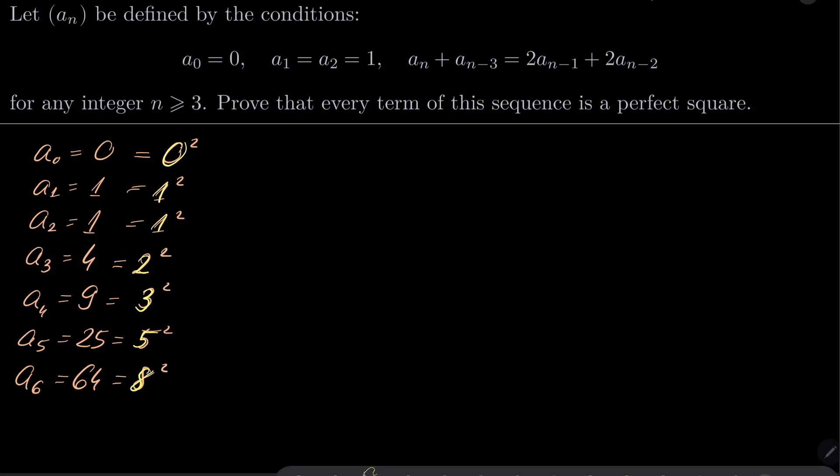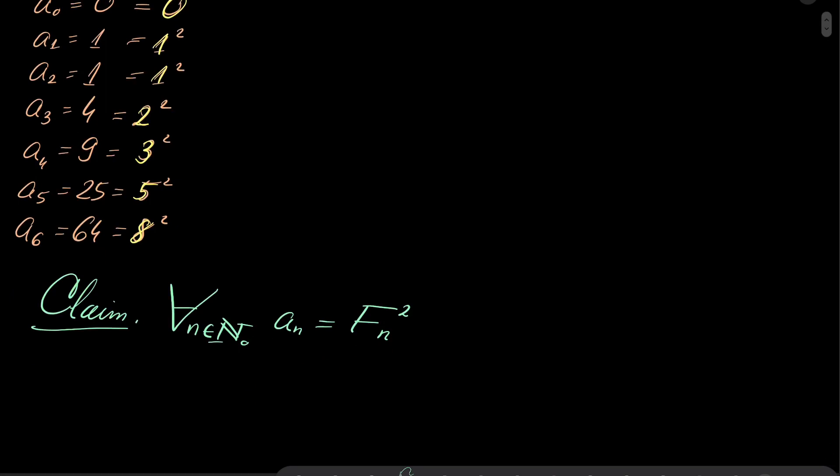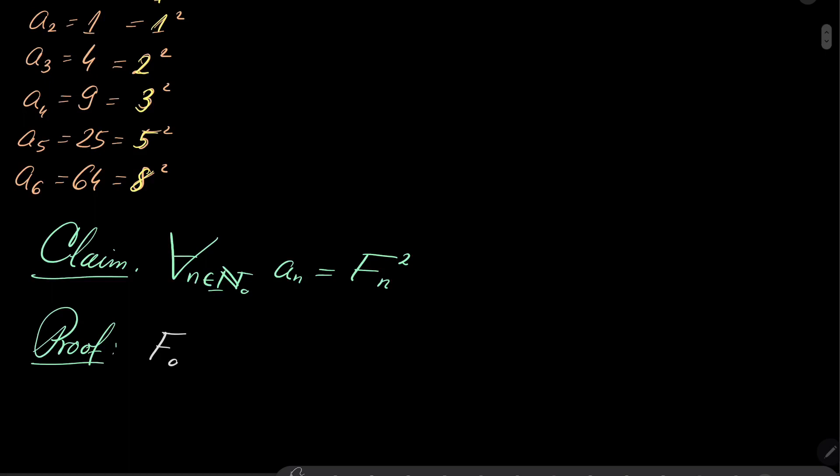It's our guess, we will prove it. So my claim is that for every natural number n, a_n is the nth term of Fibonacci sequence squared. And I will prove it by showing that our two sequences satisfy the very same recursion. Proof of my claim.